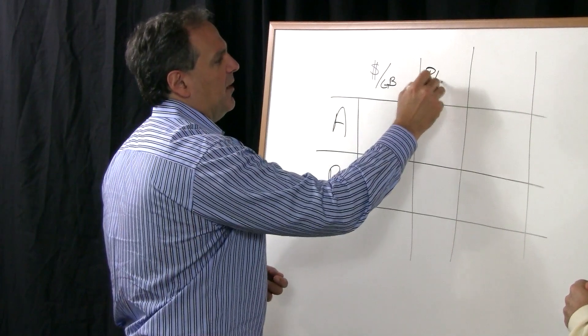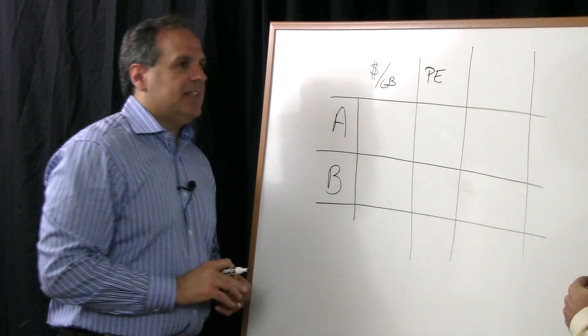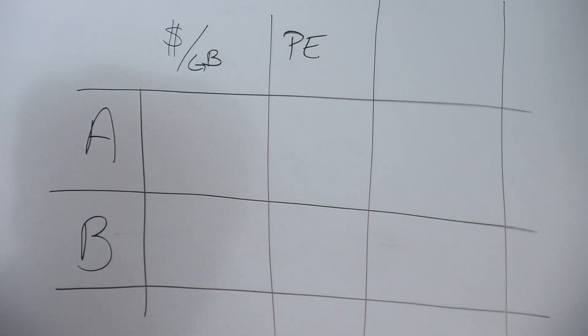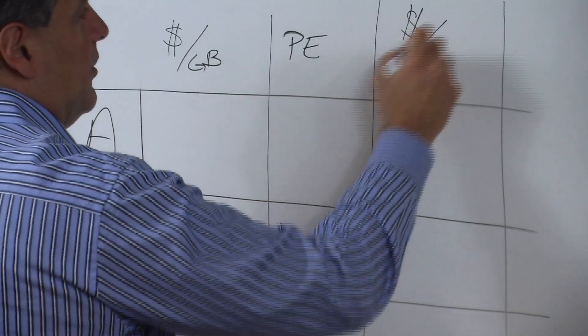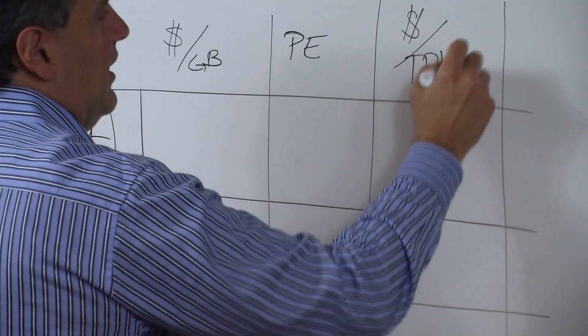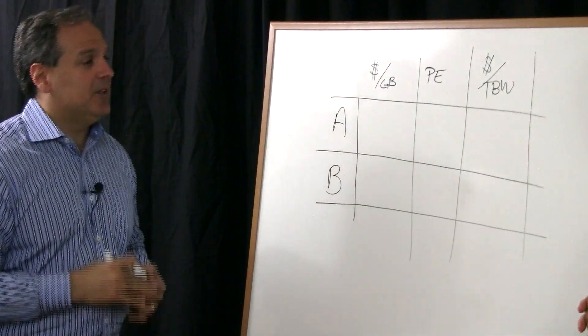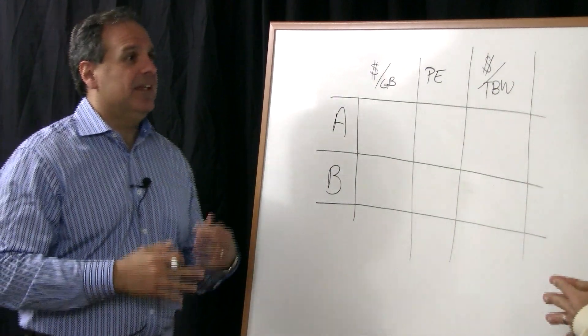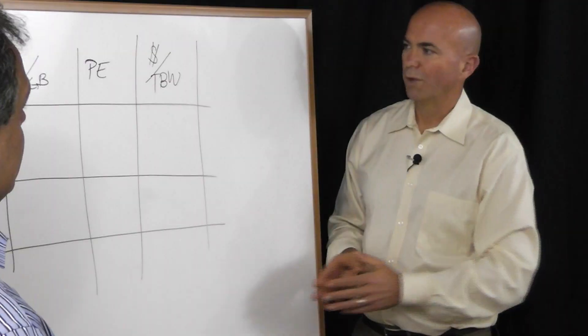And then lastly, an analogy to what would be a tire wear or tread wear spec is dollars per terabyte written. That's the bottom line. When you buy a tire, it's $200 and it's 40,000 miles. You can do the math. That's how much wear you get per dollar.